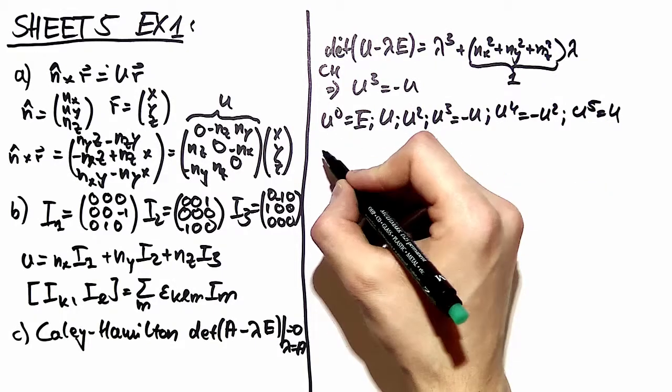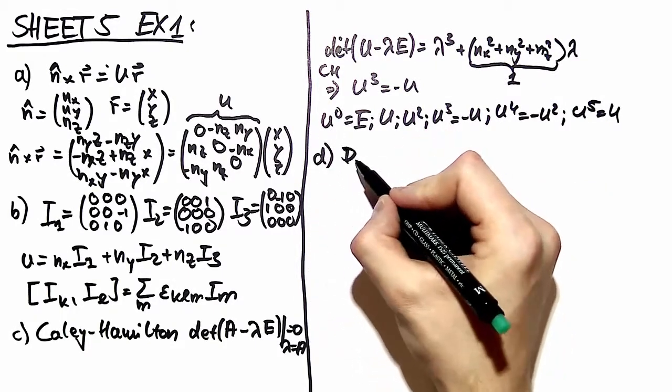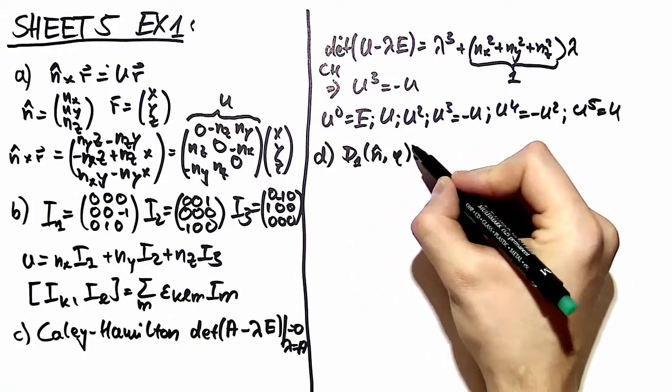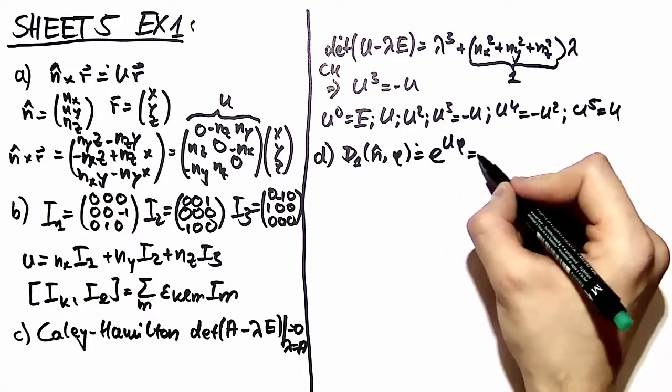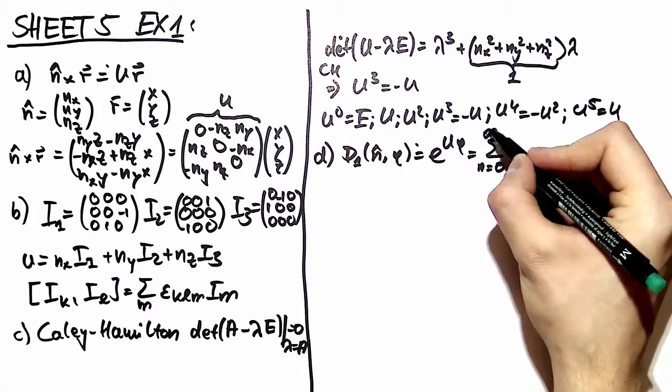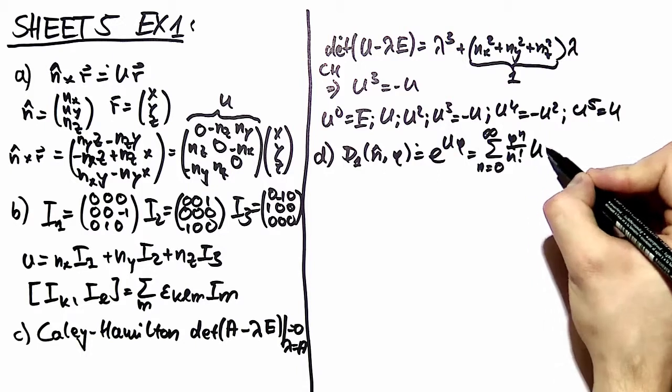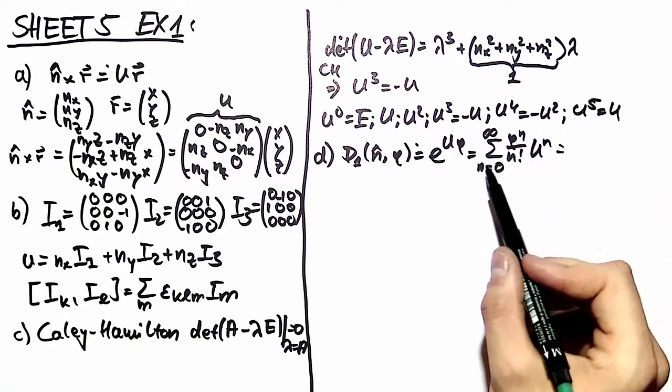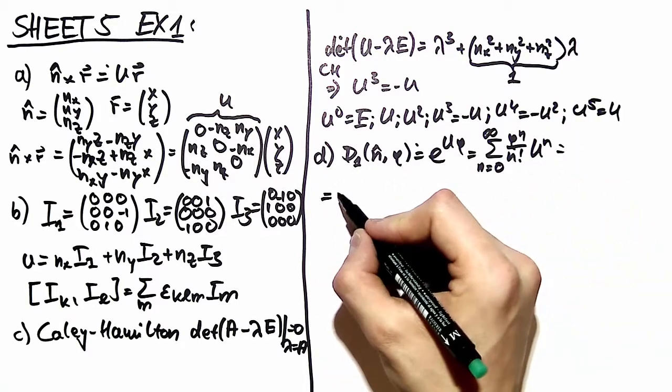So what does this mean? Well, we look at that in part D. We define the Euler rotation around an axis n with an angle phi as being e to the u times phi. And this is nothing else than the Taylor series from n equal to zero to infinity of phi to the n over n factorial times u to the n. Now you know that only three different matrices occur in this Taylor series. So you can exclude them from the summation.